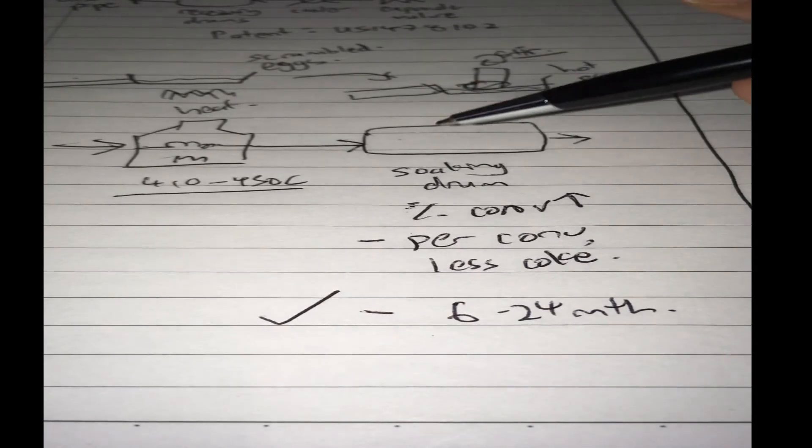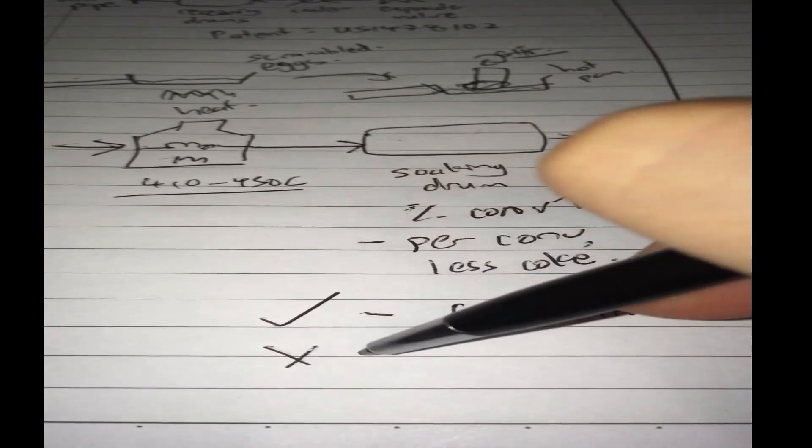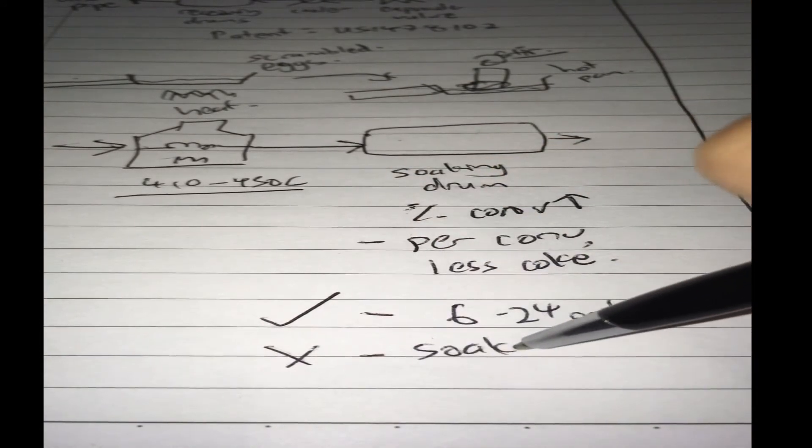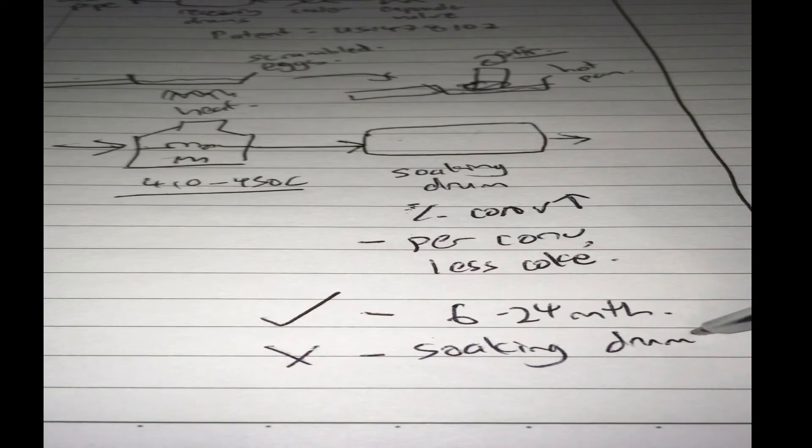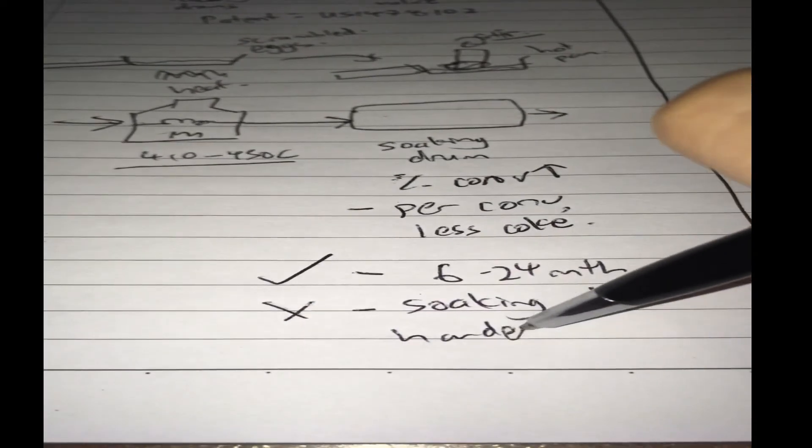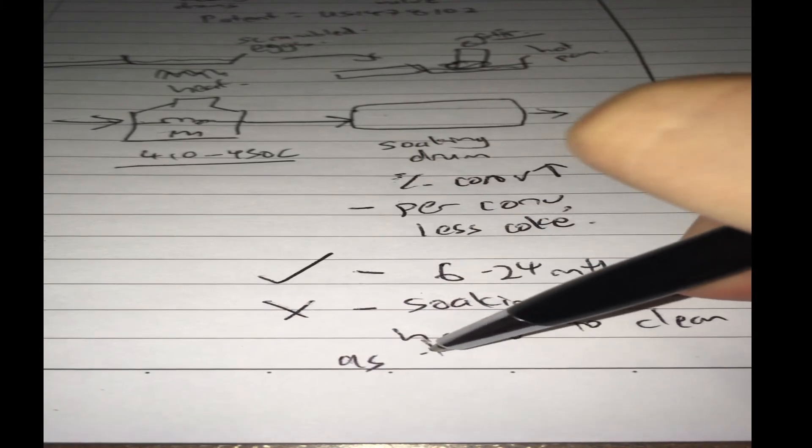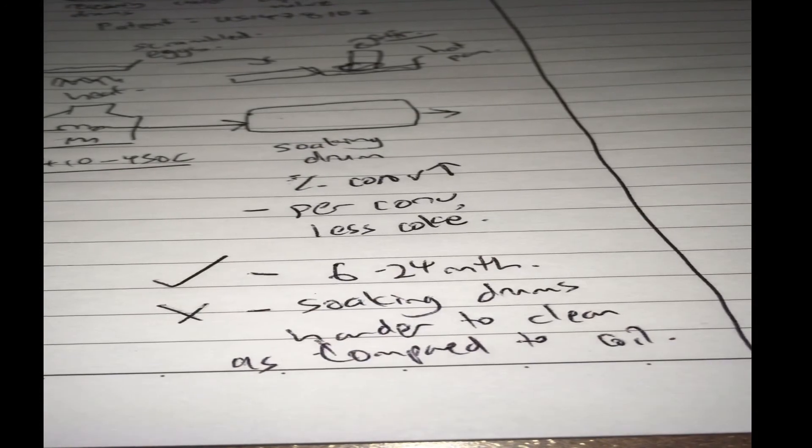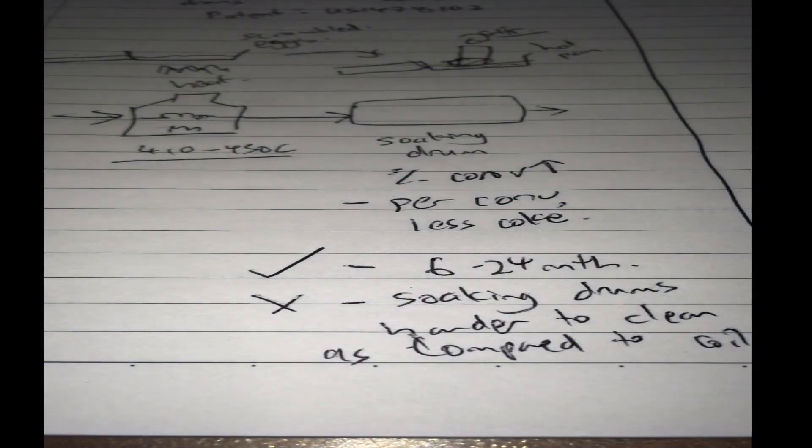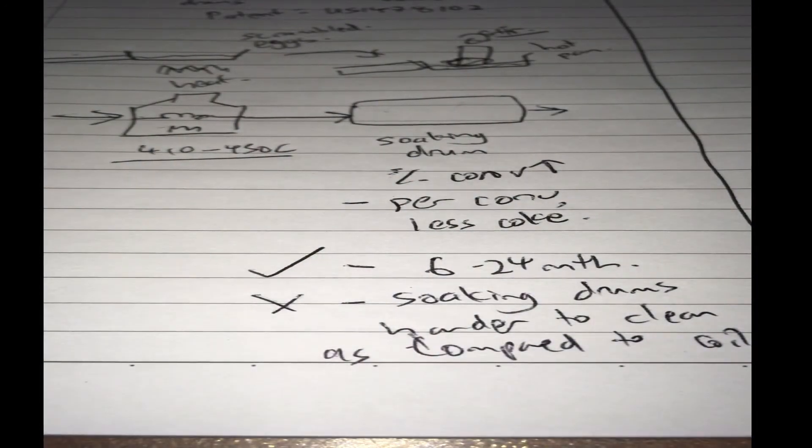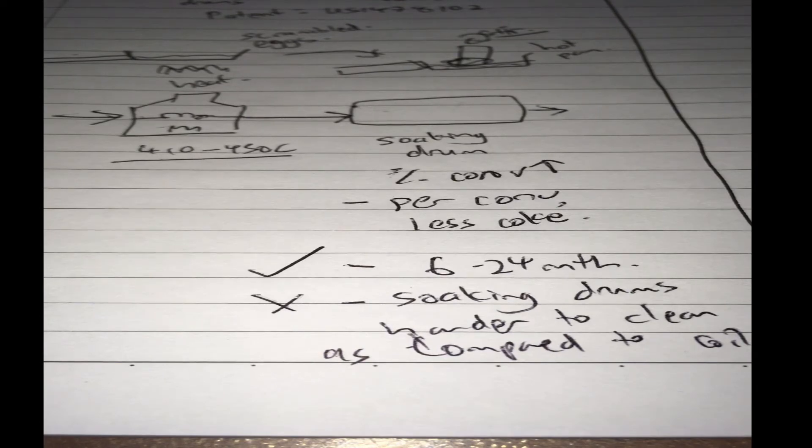However, sometimes people find that soaking drums are harder to clean as compared to the coil. So it's a kind of give or take situation. That's basically what you get in a visbreaker.